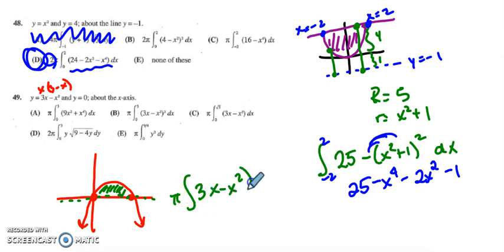And the r in this case is 3x minus x squared. So I square that whole expression. And then my limits of integration are 0 to 3. So let's see if I can find which answer it is. And it looks like it's choice b.